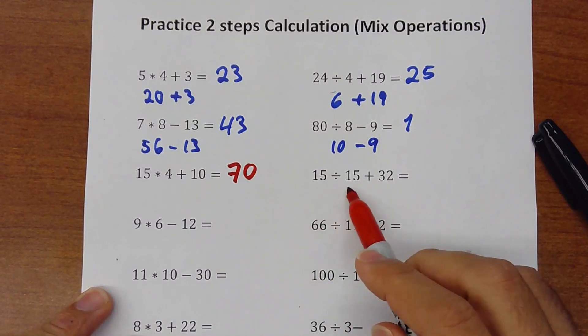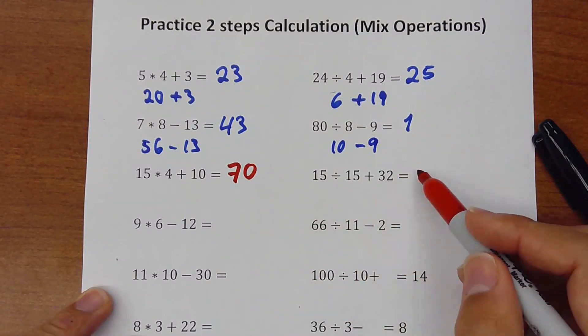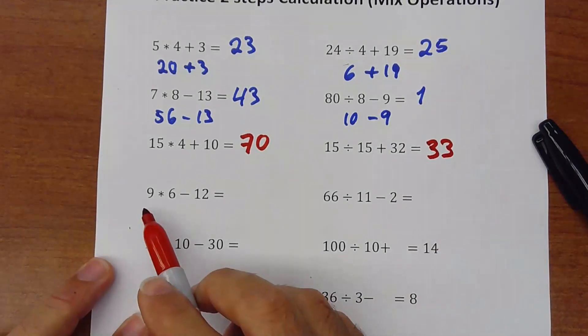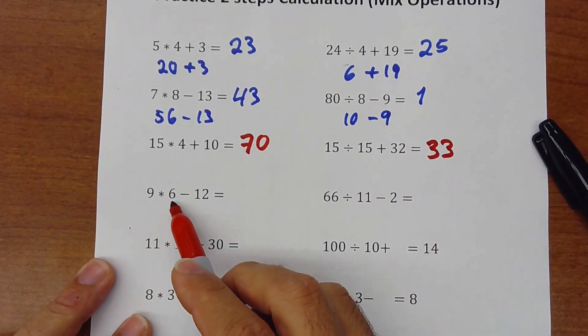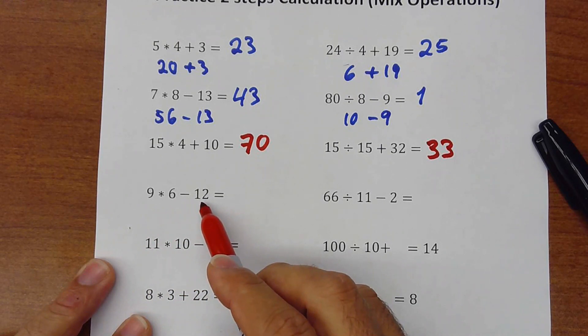15 divided by 15 is 1, plus 32 it would be 33. 9 times 6, 54 minus 12, it would be 42.